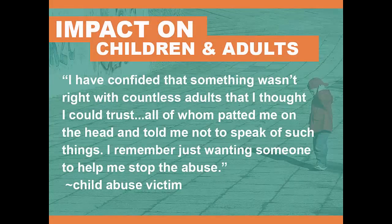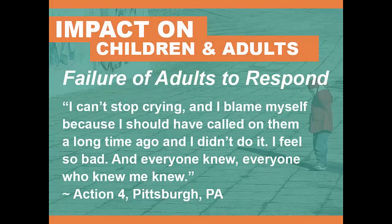A child abuse victim shared: 'I have confided that something wasn't right with countless adults that I thought I could trust, all of whom patted me on the head and told me not to speak of such things. I remember just wanting someone to help me stop the abuse.' The failure of adults to respond can have a lifelong altering impact on victims, but sometimes that failure may have the ultimate consequences. In 2012, an 11-year-old boy was beaten to death over a nine-hour period by his mother's boyfriend. The neighbor, who did not want to be identified, told Philadelphia Action News she wished she had done more to help: 'I can't stop crying and I blame myself because I should have called on them a long time ago and I didn't do it. I feel so bad and everyone knew.'